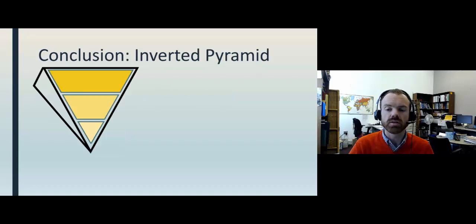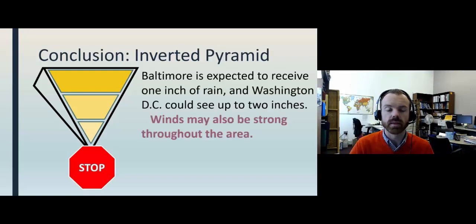If you are writing a story with the inverted pyramid style, you can simply end after the less important details. There is no need to summarize or repeat any information. Let's look at the example of the weather story. It ends with this sentence: Winds may also be strong throughout the area. The writer gives a minor detail, then stops. Remember, the inverted pyramid style makes it easy to cut from the bottom, so there is no need to think of a clever ending. It might get cut from the story anyway.